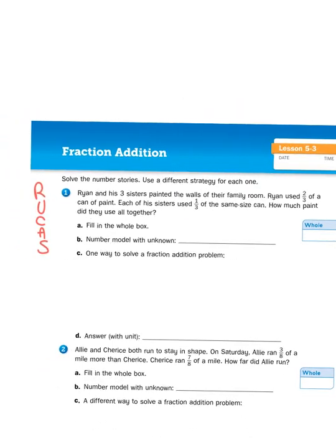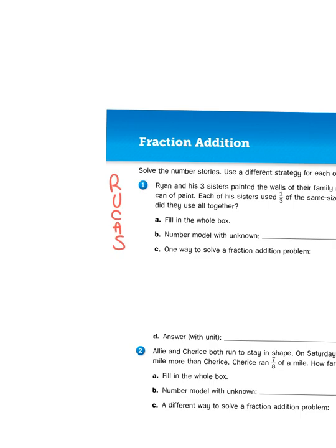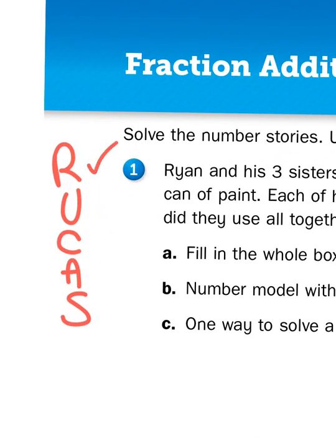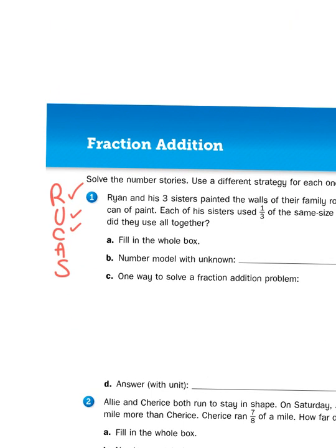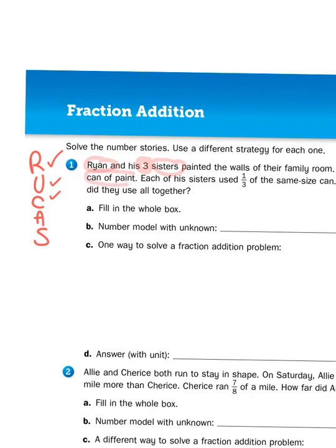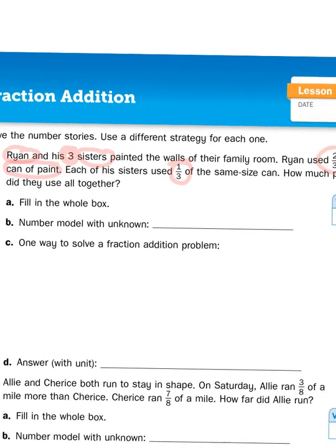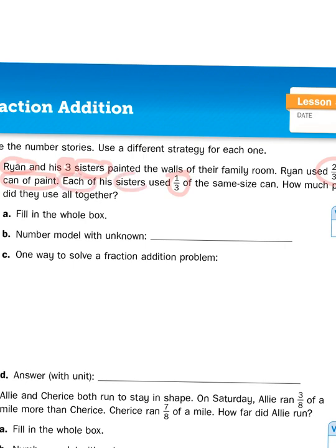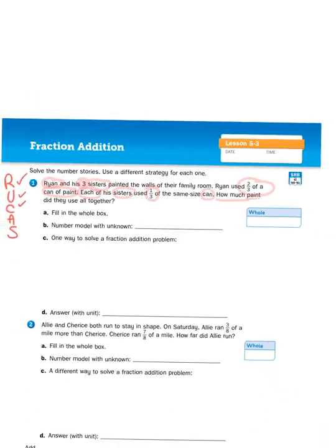So let's read. Ryan and his three sisters painted the walls of their family room. Ryan used two-thirds of a can of paint. Each of his sisters used one-third of the same size can. How much paint did they use altogether? So let's reread that, and as I do, I'm going to be underlining and circling stuff. Ryan and his three sisters, notice how much emphasis I put around the three, painted the walls of their family room. Ryan used two-thirds of a can of paint. Each of his sisters used one-third of the same size can. So each sister used one-third of a can.